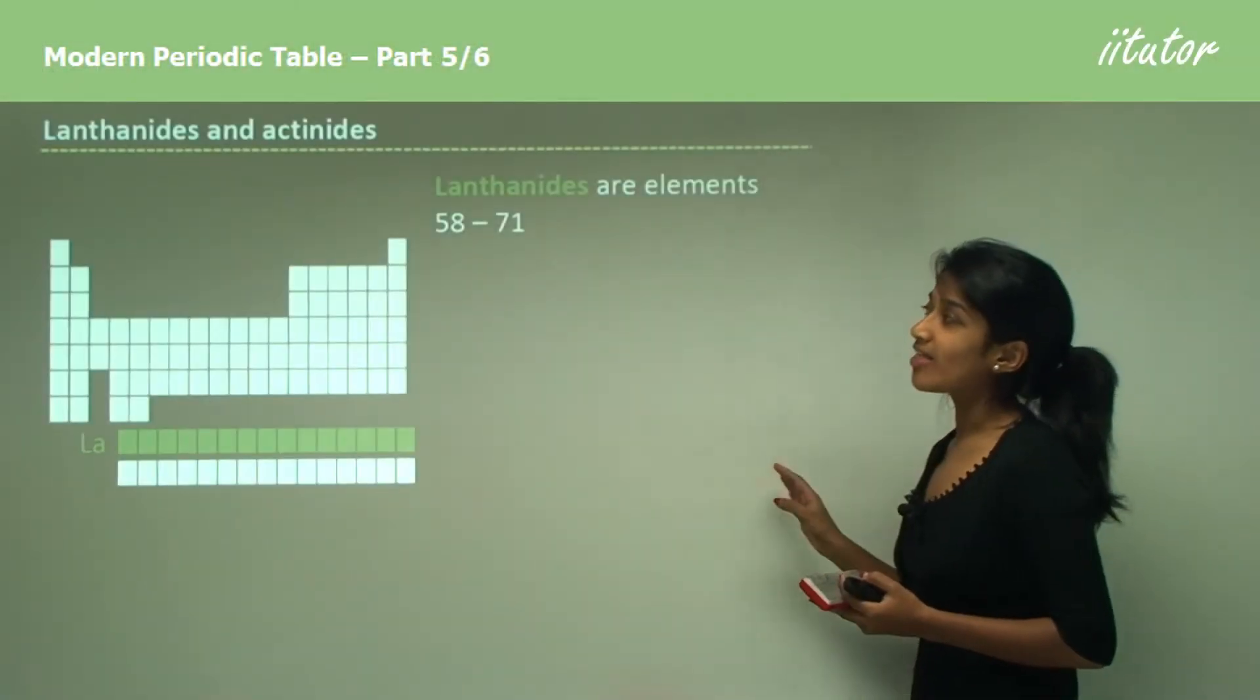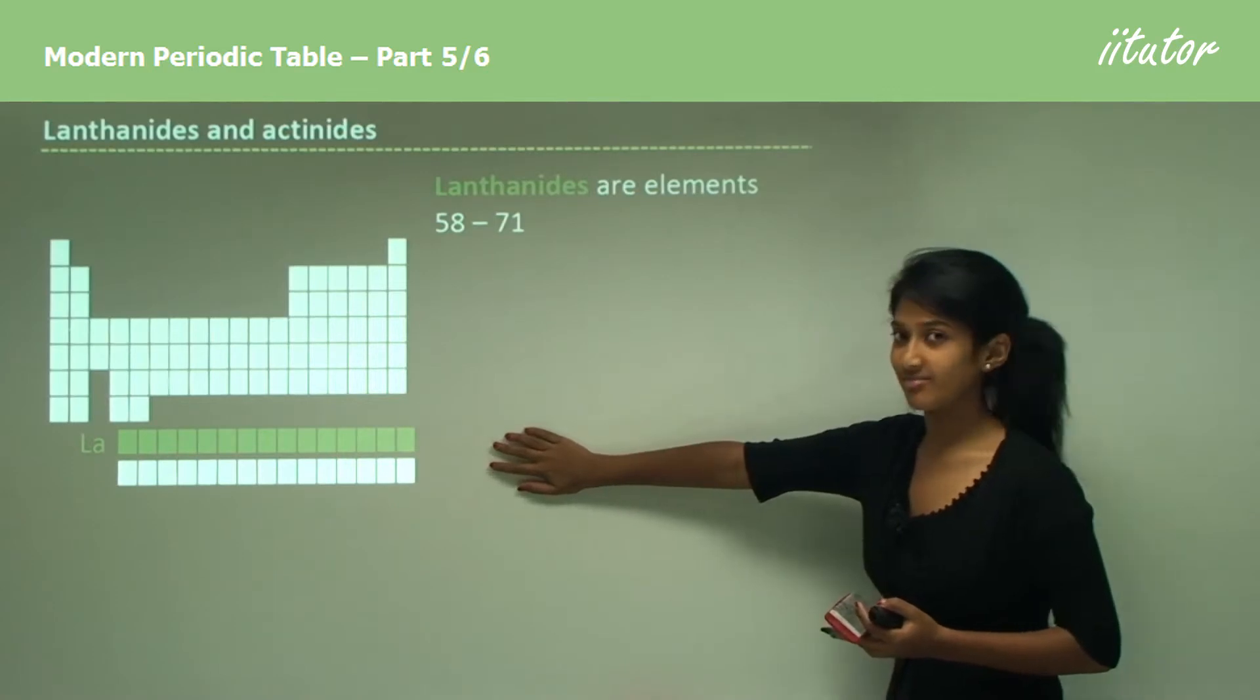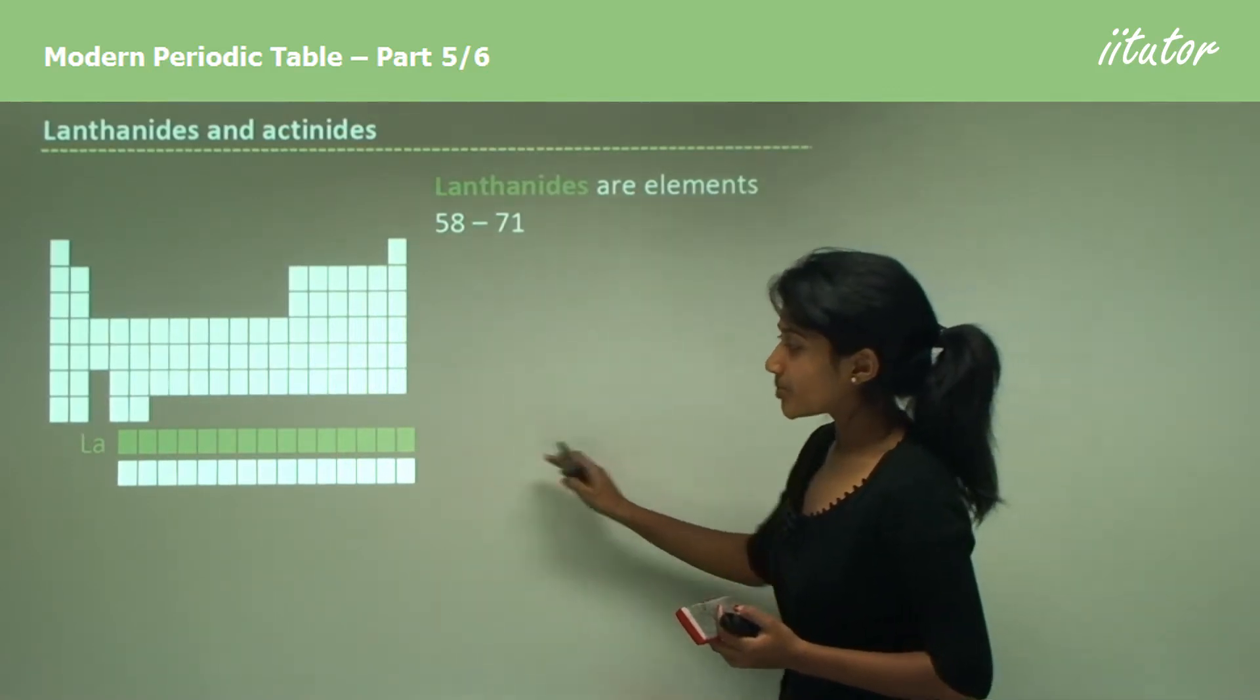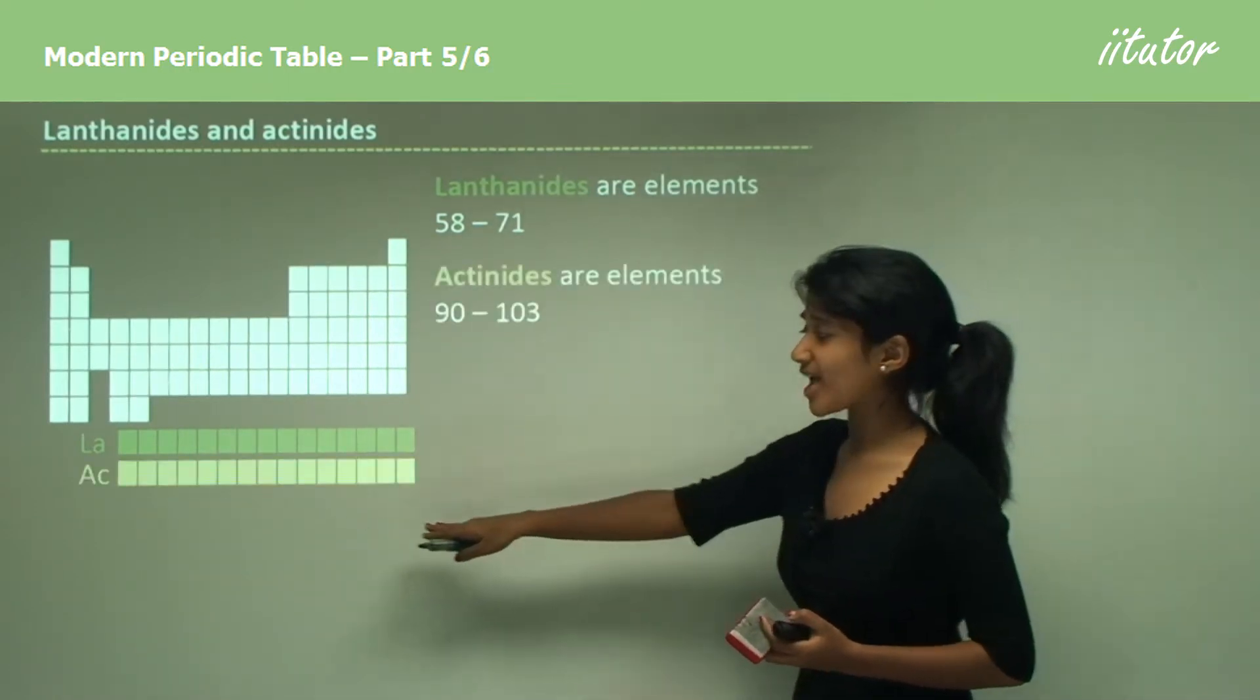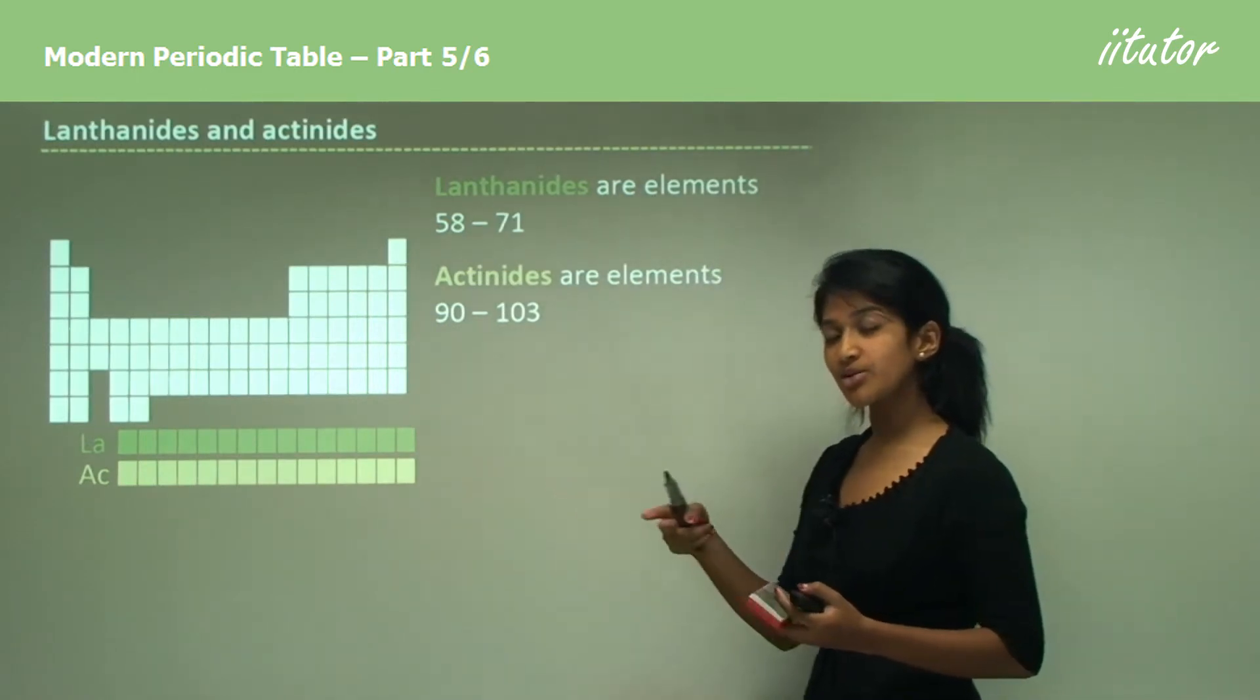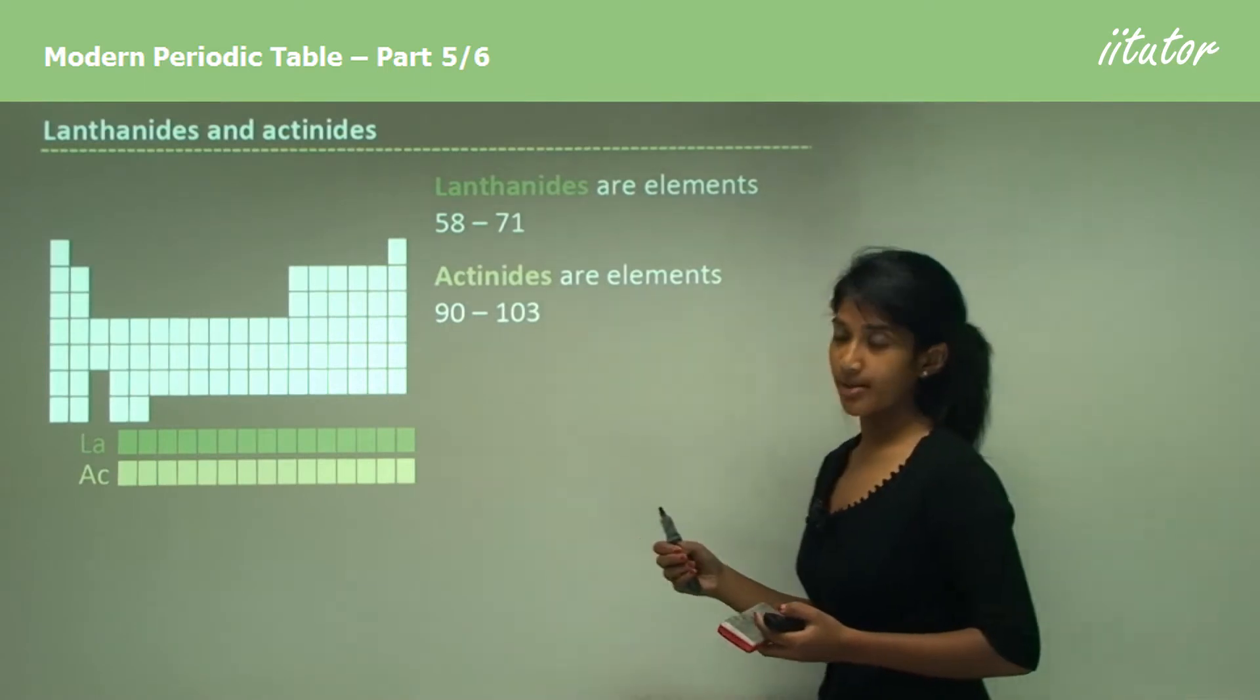Now looking at lanthanides and actinides. These are quite hidden, they're below the periodic table, quite detached. Here we have the green ones, the lanthanides on the top, and we have the actinides on the bottom here. So those are the two separate groups, or separate rows in your periodic table.